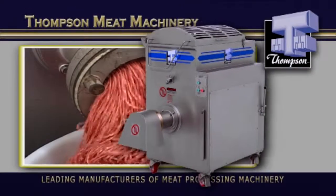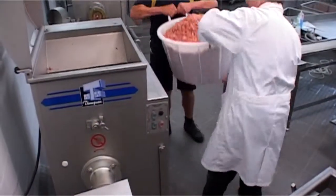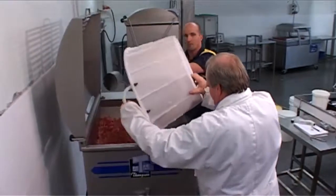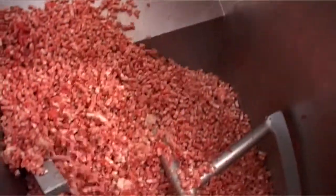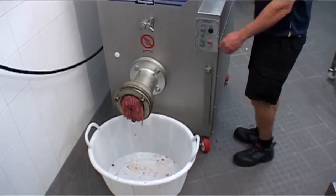This is the flagship of the Thompson Mix & Mincer range. The 4000 series was originally designed for all markets, from butcher shops to industrial plants, and it did its job so well that it has generated a complete new line of even larger capacity machines.